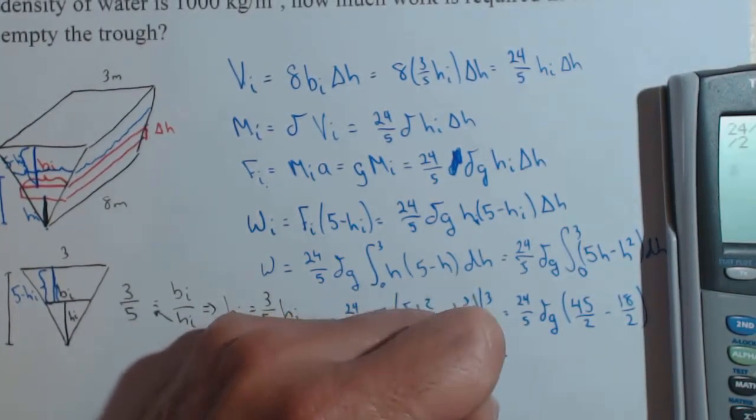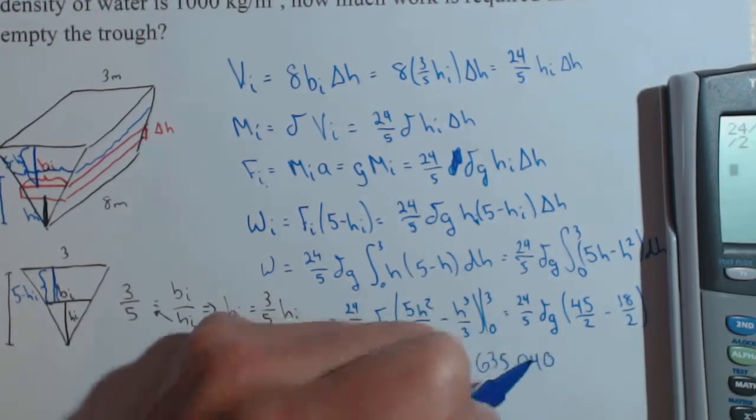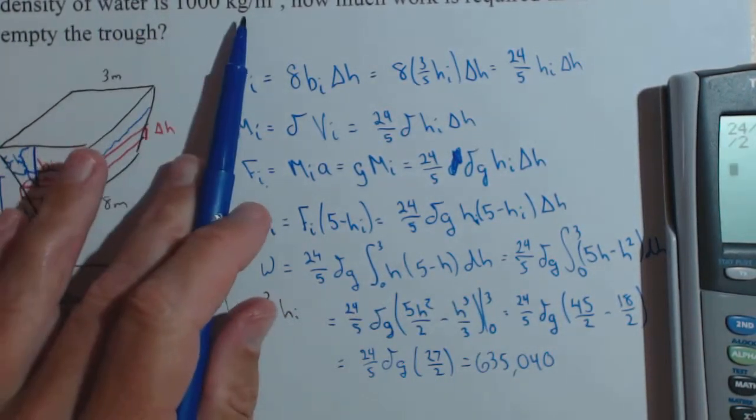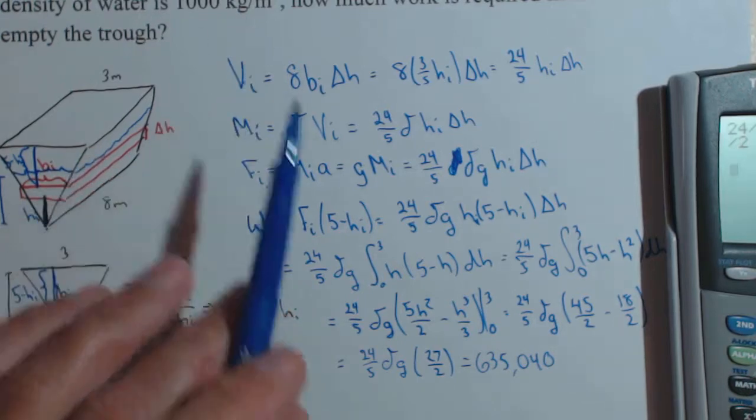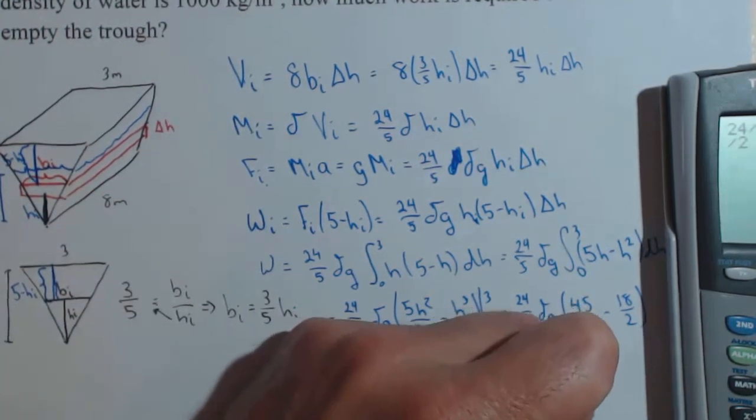635,040, and the units, because of what we're in, kilograms and meters, is going to be joules.